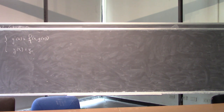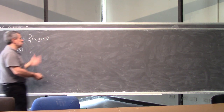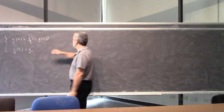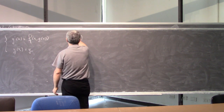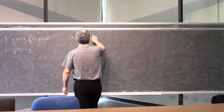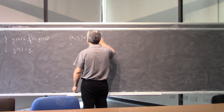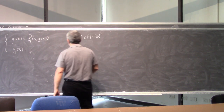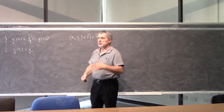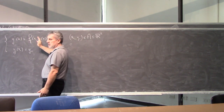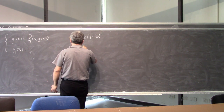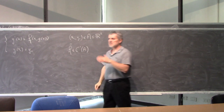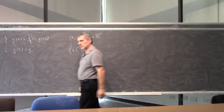Questo è il problema di Cauchy che abbiamo studiato. Noi sappiamo che, per esempio, x₀, y₀ appartiene a un aperto A di R². La funzione deve essere continua e localmente lipschitziana rispetto alla seconda variabile. Ad esempio, se F è di classe C¹ su A, questo è un'ipotesi ampiamente sufficiente per il teorema.